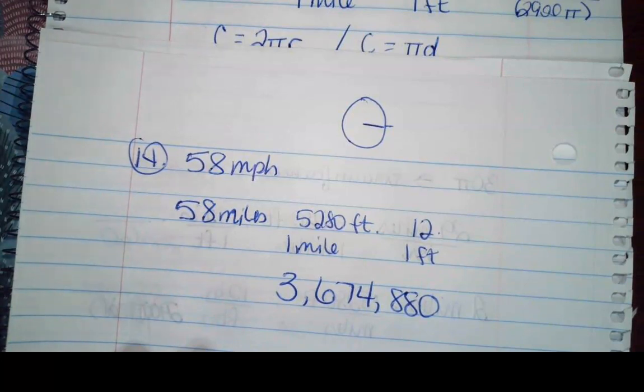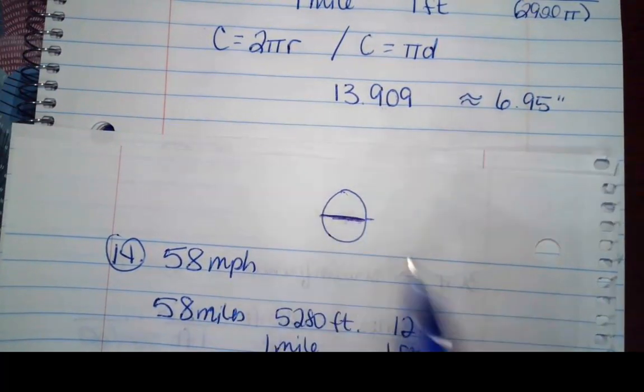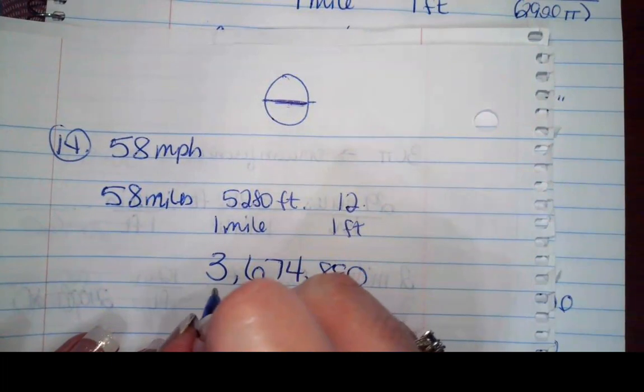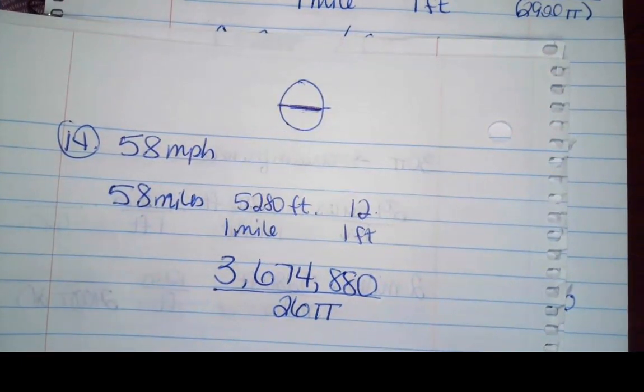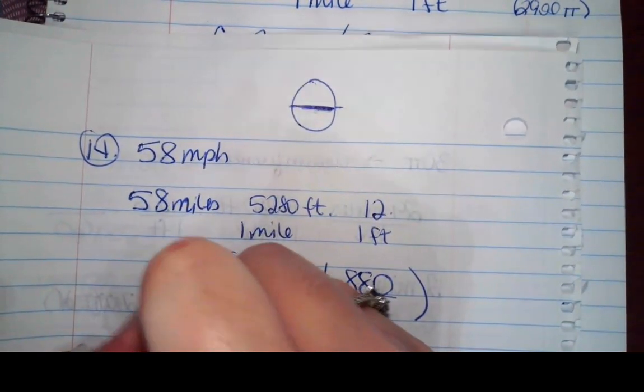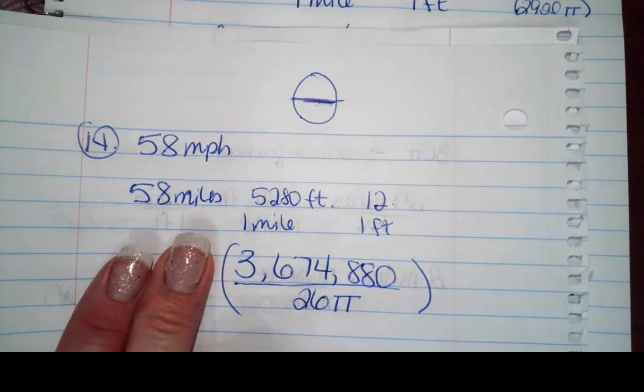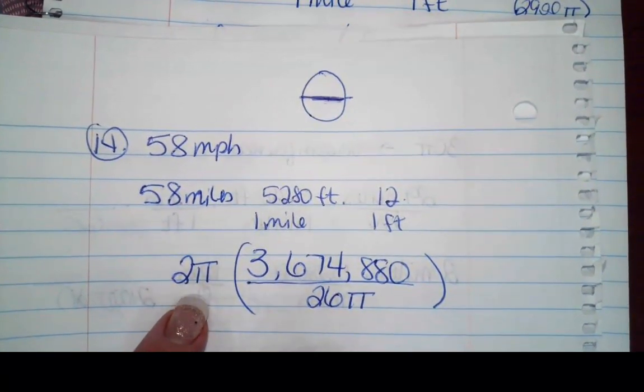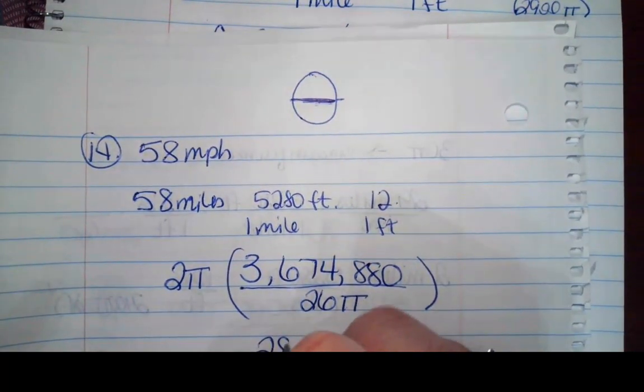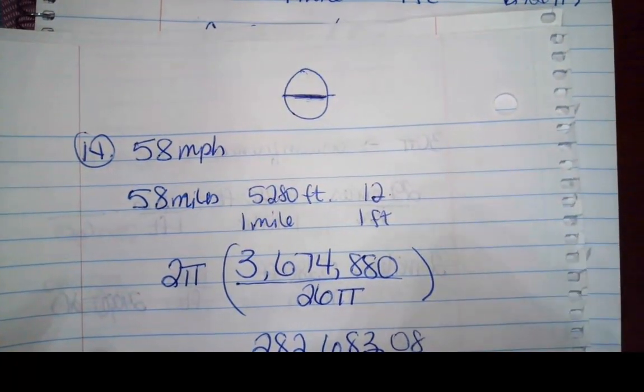So from here, what are we going to do? Well, I do know that if this is 13 inches from the center, then that must mean it's 26 inches that direction or the diameter is. So I'm going to divide this by 26π and then I'm going to turn around and I'm going to multiply that by 2π. So doing this part will tell us how many revolutions it makes and doing this will change it into angular velocity. So we get a final answer of 282,683.08 radians per minute.